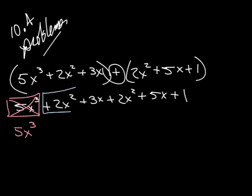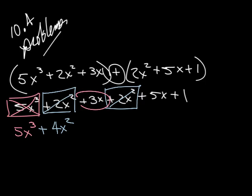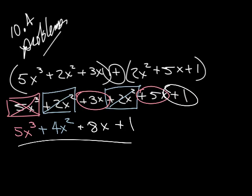We have a 2x squared, oh, there's another 2x squared, so I can add those up, and I get 4x squared. Remember, you just add the numbers, you don't add the exponents or the variables. Then, I have a plus 3x and a plus 5x, so that's going to give me plus 8x, and then this 1 here just kind of dangles there because there's nothing to combine it with, and there's my answer. So, that's how you do number 26.